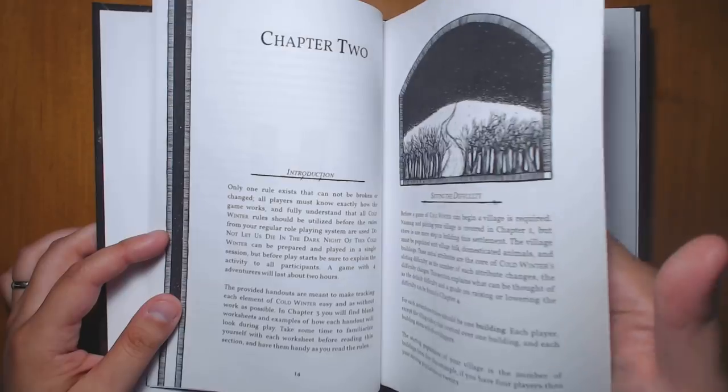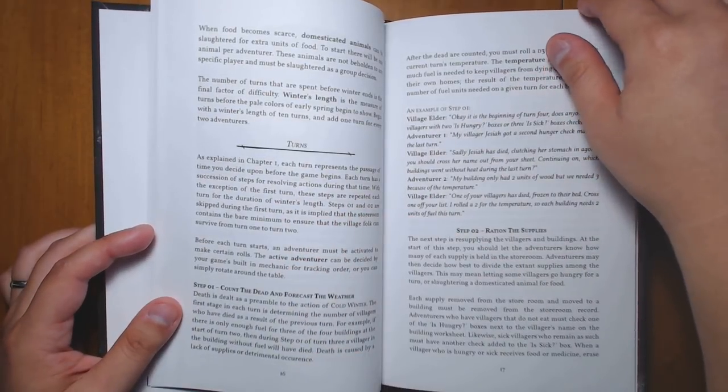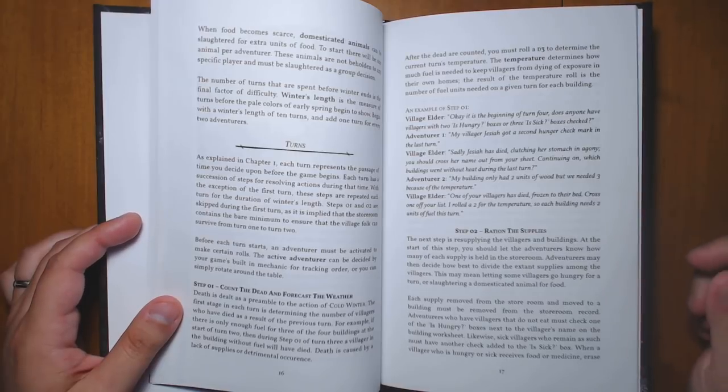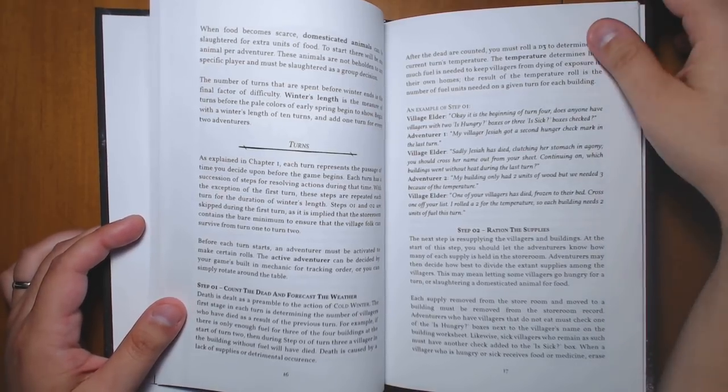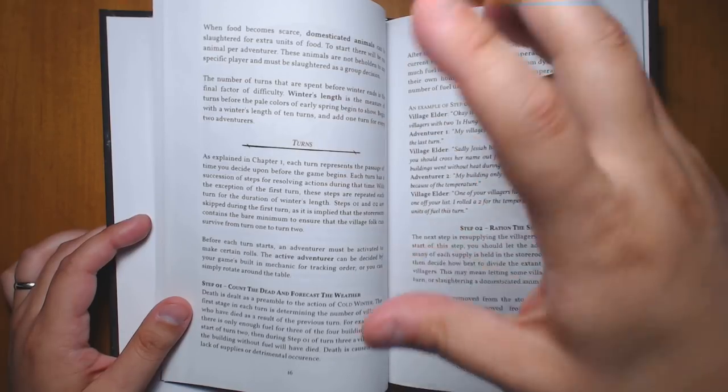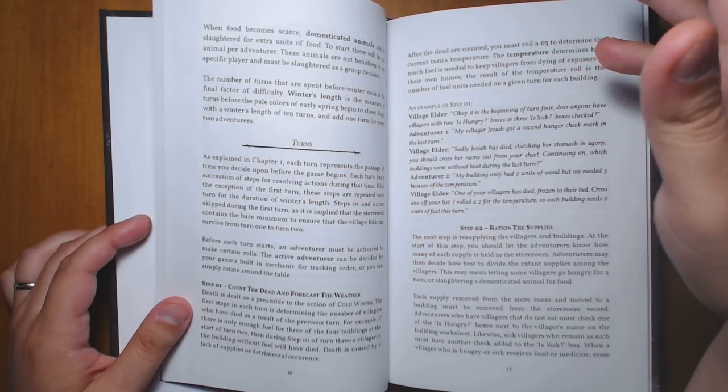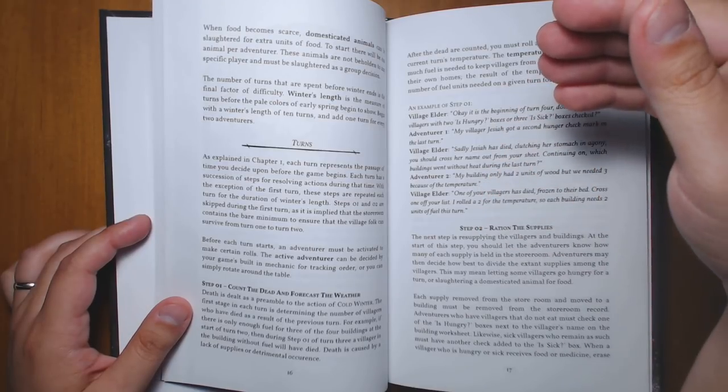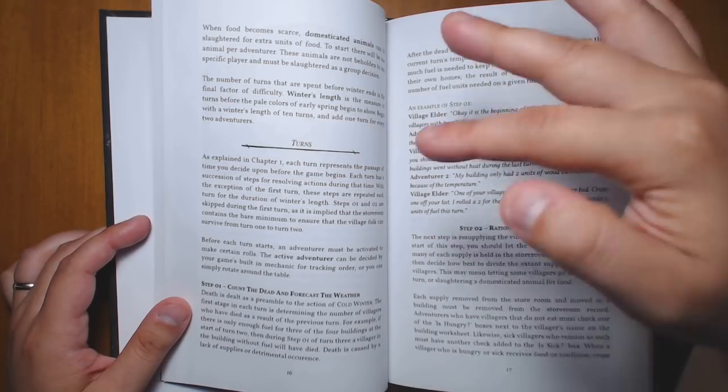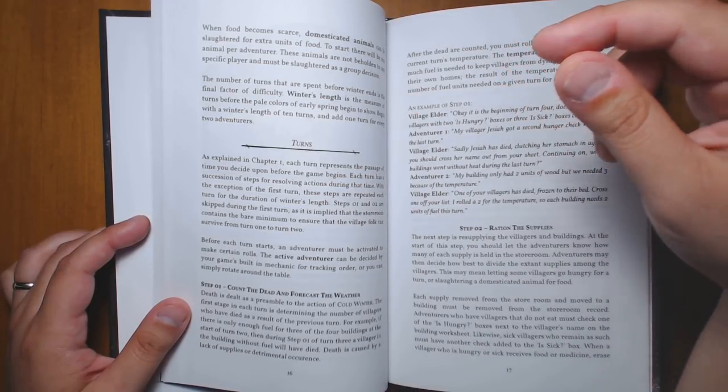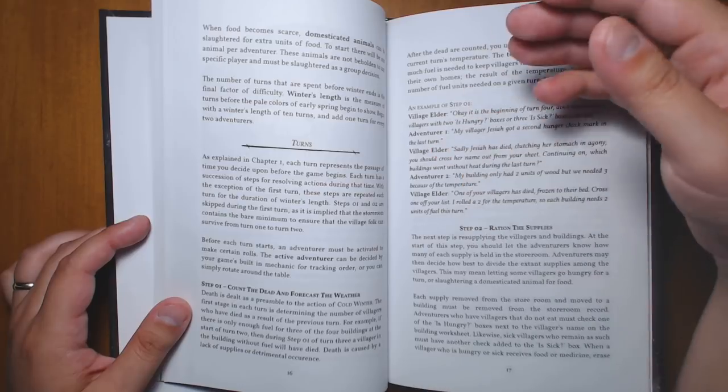So basically how the game works is that there's a number of turns over the course of a winter. It's 10 or more. There's a way of randomizing it. And over the course of each turn, you're going to have a bunch of houses. Each player is going to be in charge of a house that's going to have like five or so people in it. And every turn, the people are going to need to eat. They're going to need to have medicine because some of them are going to get randomly sick. And they're going to need to have fuel to keep their houses warm. And when this doesn't happen, you're going to be marking off little trackers.